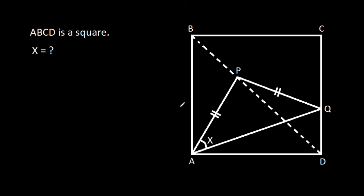In this video, we have been given that ABCD is a square and AP is equal to PQ, and angle PAQ is X. We have to find X.